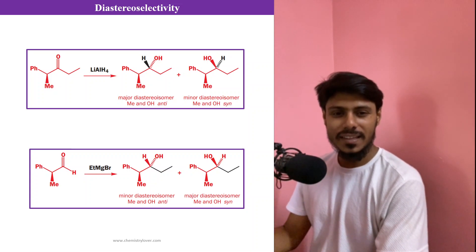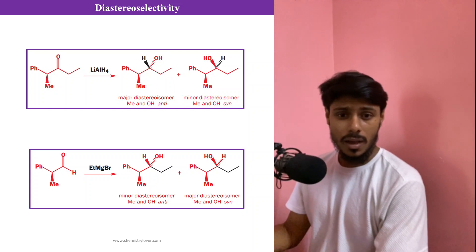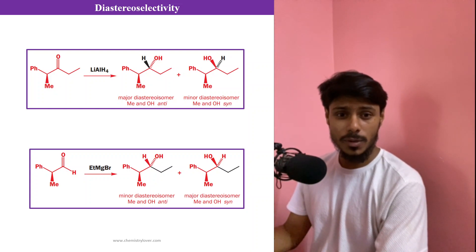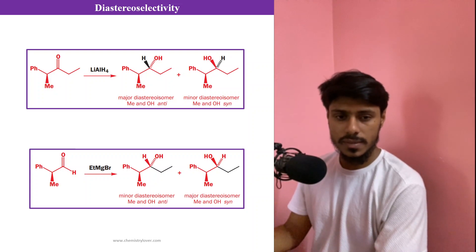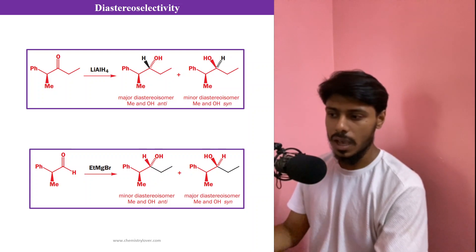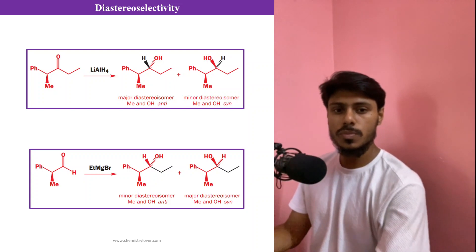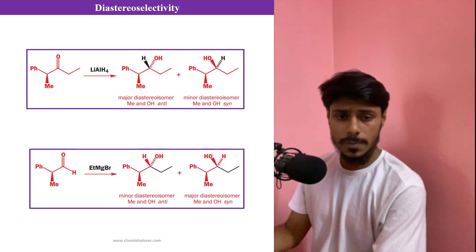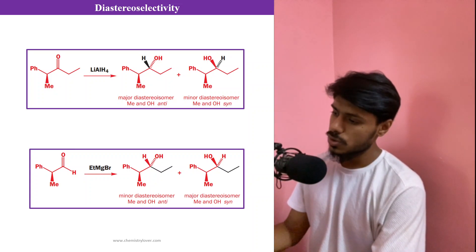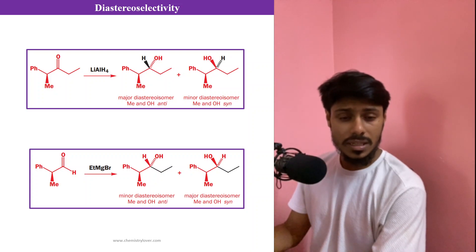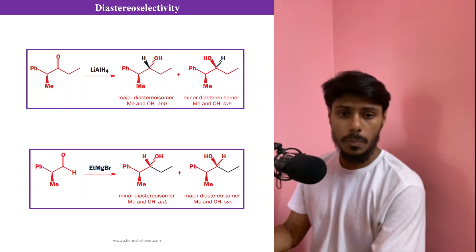Hey guys, welcome back to our channel. In this video I am going to resume the series '100 Important Topics in Organic Chemistry.' I started this series a long time ago and made around 12 to 13 videos, but for some personal reason I could not continue. Now I will continue this series — this is going to be the 13th video. Today's topic is diastereoselectivity of attack on a carbonyl compound.